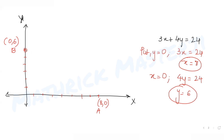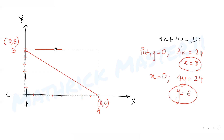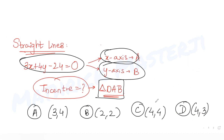Drawing a straight line through these two points gives us triangle OAB, with O at the origin, A at (8,0), and B at (0,6).